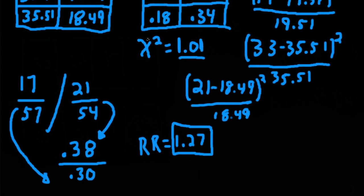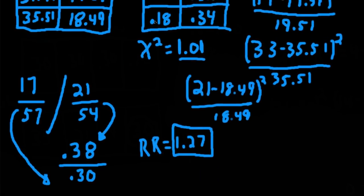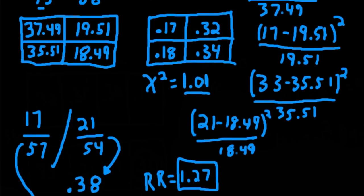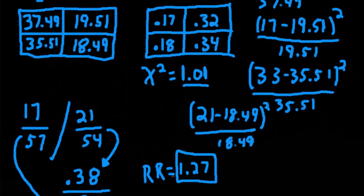That's how you would compute a chi-square test of independence, using a 2 by 2 contingency table, and computing relative risk as an effect size measure.